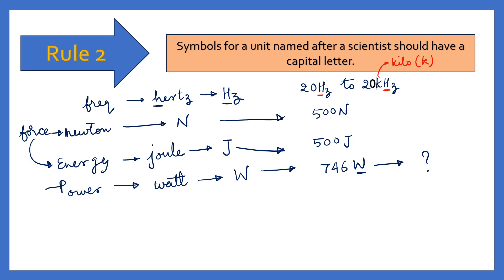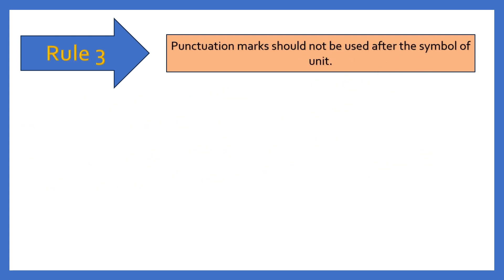So this is your rule number two. Let's go to rule number three. Punctuation marks should not be used after the symbol of unit. So very important, again it is talking about symbol. And what should we not use? Punctuation marks. So what are punctuation marks? Like full stop or comma or apostrophe or colon, semicolon, etc. Quotes, single quote, double quote, whatever be that. So these should not be used with the symbols of the units. So how are the ways to put in symbols? For example, 5 kilometers. So 5 kilometer how will you write in symbols?